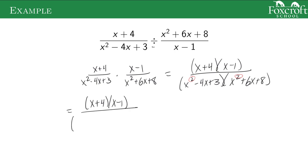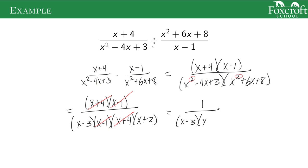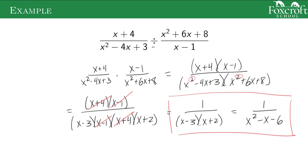Factoring quadratics is not going to go away at any point. The first one: multiply to 3, add to negative 4 — that's negative 3 and negative 1. The second one: multiply to 8, add to 6 — that's 4 and 2. We've taken the big quadratics on the bottom and broken them into smaller pieces. Now we see x plus 4 on the bottom cancels with x plus 4 on the top, and x minus 1 on the bottom cancels with x minus 1 on the top. If you cancel out everything on top, that leaves a 1. On the bottom we have x minus 3 and x plus 2 left. You could leave your final answer like this, or FOIL it out to get x squared minus x minus 6 — either answer is acceptable.